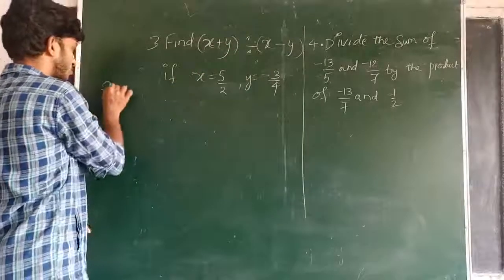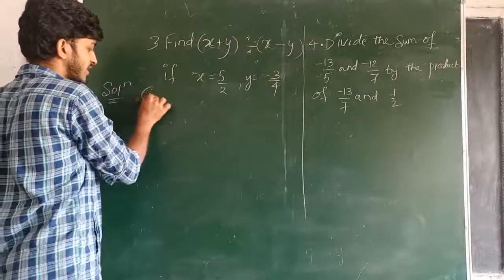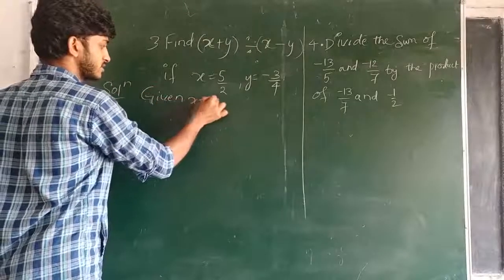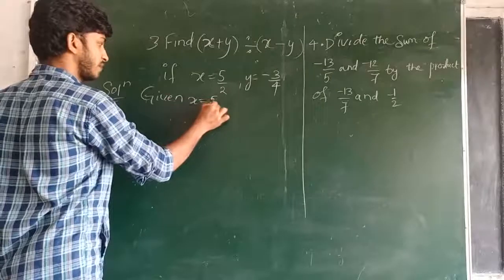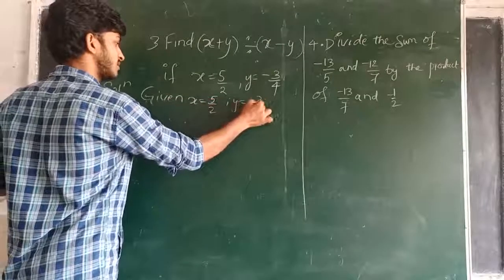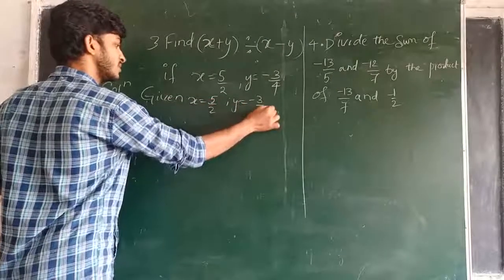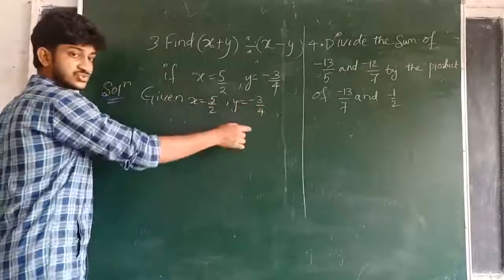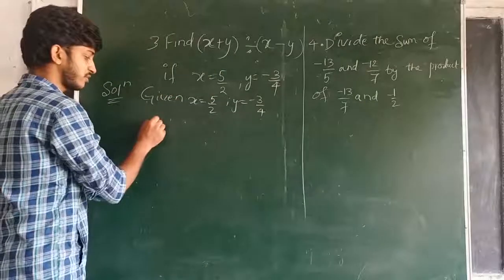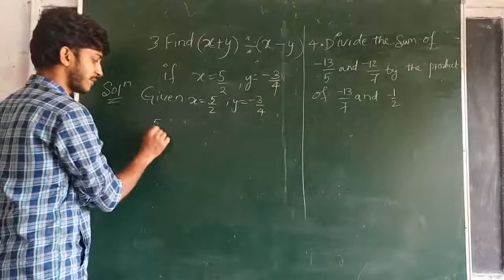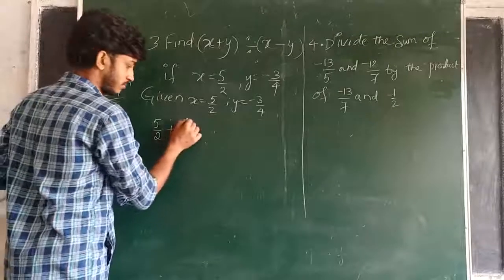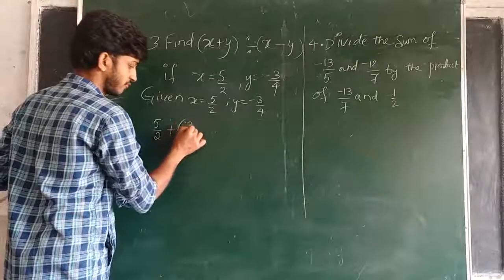Solution: first write the given values. Given x equals 5 by 2, y equals minus 3 by 4. Substitute these two values, so x equals 5 by 2. We have 5 by 2 plus minus 3 by 4 in the numerator.